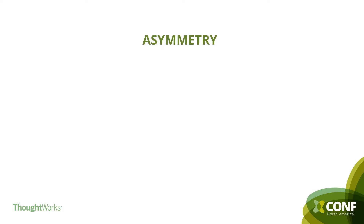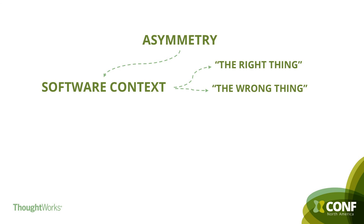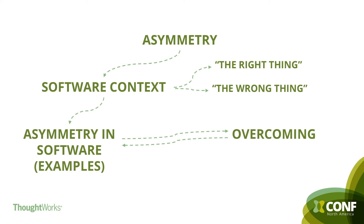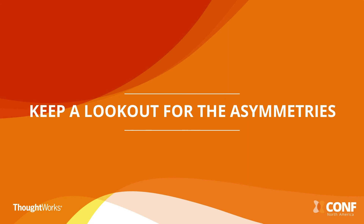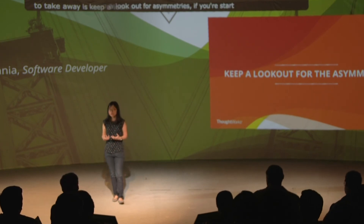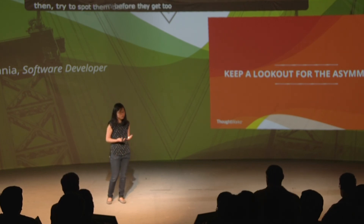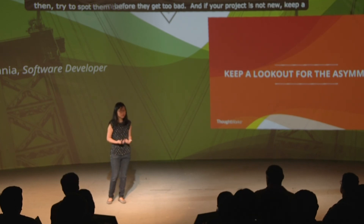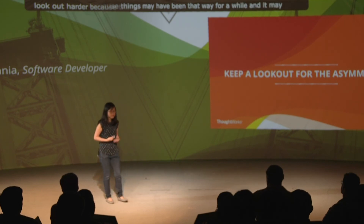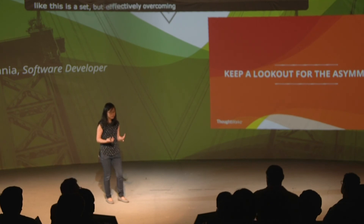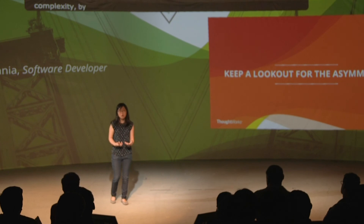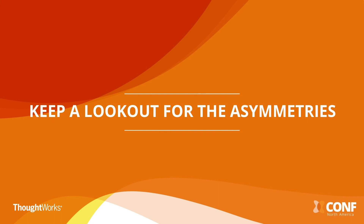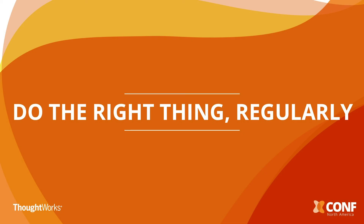Wrapping up: we started by defining what asymmetry is, brought in the software context, talked broadly about what the right and wrong things are, went through some examples and how to overcome them, and generalized by talking about strategies. One thing I want you to take away is: keep a lookout for asymmetries. If you're just starting a new project, try to spot them before they get too bad. If your project is not new, also keep a lookout — it may feel like business as usual. Effectively overcoming asymmetry means taking control of complexity by encouraging people to do the right thing or by creating an environment that supports them to do the right thing.